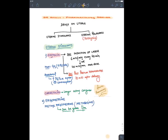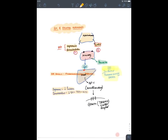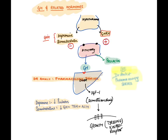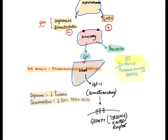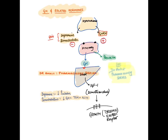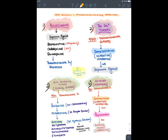Bromocriptine is indicated in all of the following except — let's discuss what bromocriptine is. The hypothalamus secretes dopamine and somatostatin as inhibitory hormones on the anterior pituitary. Dopamine primarily suppresses prolactin production; somatostatin suppresses all other hormones. So dopamine agonists are used in prolactinoma, and somatostatin analogs in acromegaly. Growth hormone acts by secreting insulin-like growth factors (somatomedins) from the liver, causing growth through tyrosine kinase receptors.